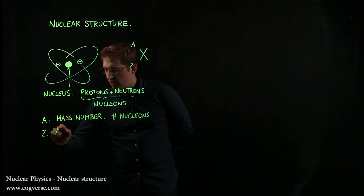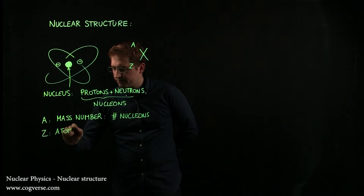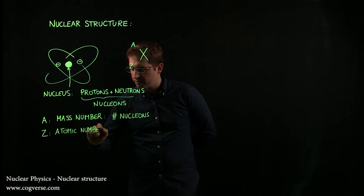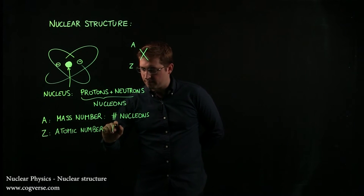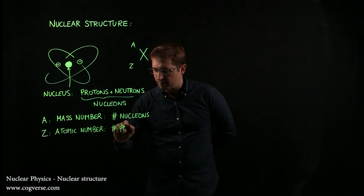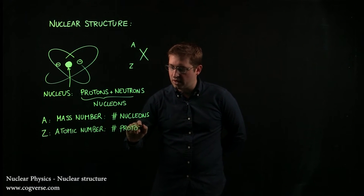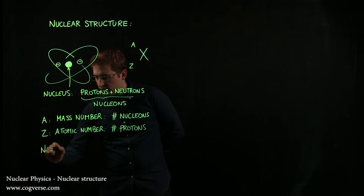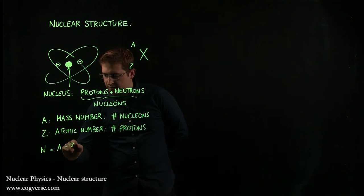While Z, which is called the atomic number, tells you the total number of protons. Which means, of course, that if you want to find the number of neutrons, all you have to do is compute A minus Z.